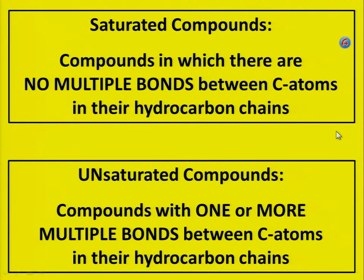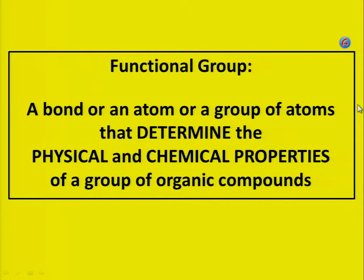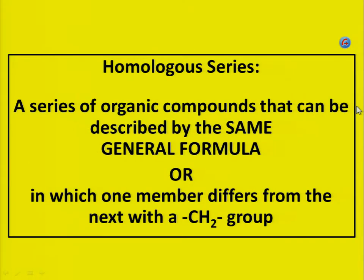Unsaturated compounds: compounds with one or more multiple bonds between carbon atoms in their hydrocarbon chains. Functional group: a bond, or an atom, or a group of atoms that determines the physical and chemical properties of a group of organic compounds. Homologous series: a series of organic compounds that can be described by the same general formula.